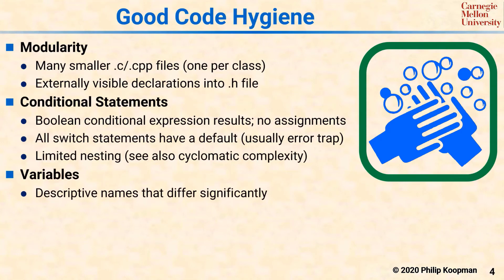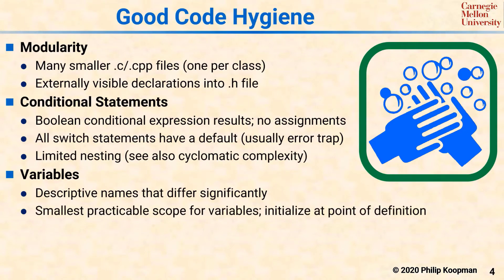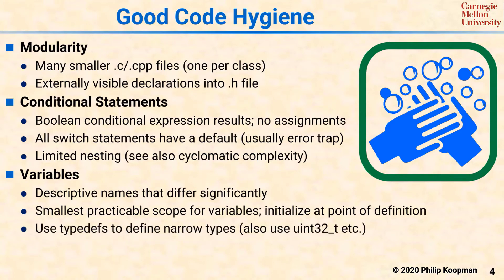Variables should have descriptive names that differ significantly from each other so that it is difficult to confuse them. Each variable should have the smallest practical scope of visibility and should, in general, never be globally visible. Variables should be initialized at the point of definition to reduce the effort required to check whether the variable is potentially uninitialized. The strongest typing information practical should be used to keep variable types straight. At the very least, the C language portable integer size types, such as uint32_t, should be used to make variable sizes explicit. This is especially important in small embedded processors, where default sizes for integers might be changeable or other than the 32-bit integer size that desktop programmers are used to. Generally speaking, more typedefs are better for keeping straight what's going on in terms of data typing.